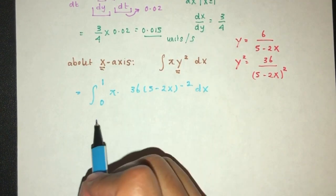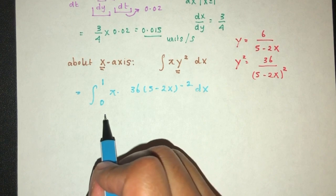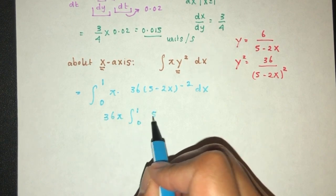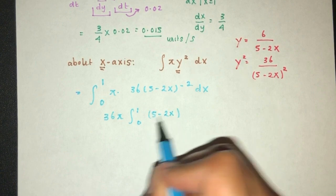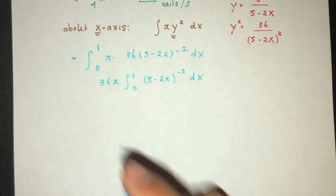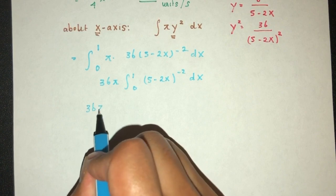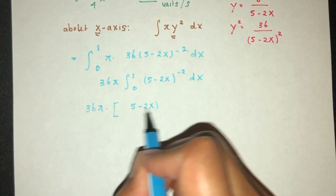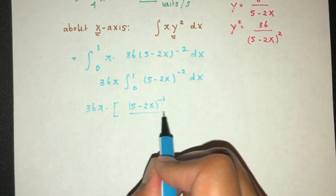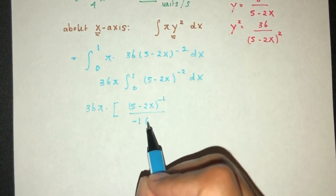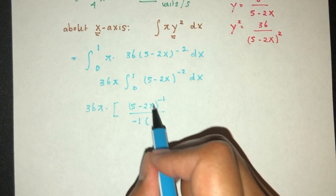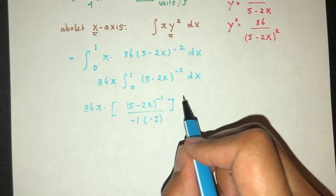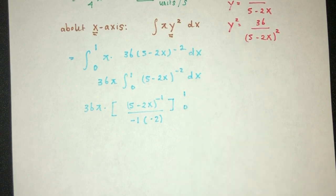Now we can take these two values up because they are just constants. That will be 36π from 0 to 1, and we have (5-2x)^(-2) with respect to dx. First increase the power by 1, should become -1. Then divide by the same power, then divide by d/dx of the value inside, which is -2. Of course, the limit is 1, 0. So let's see what we have.